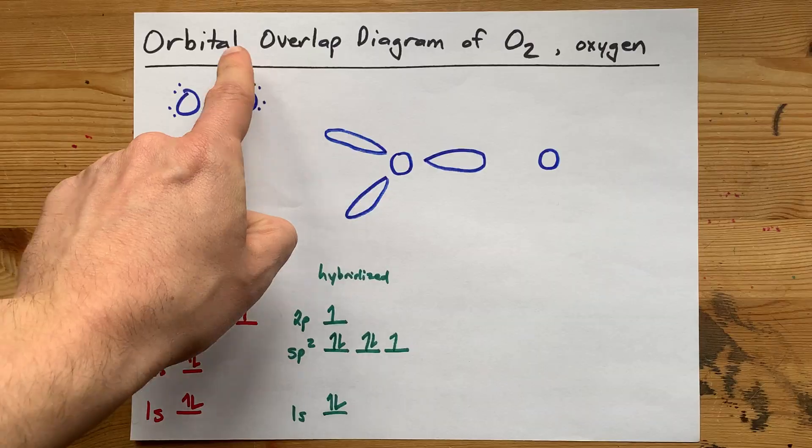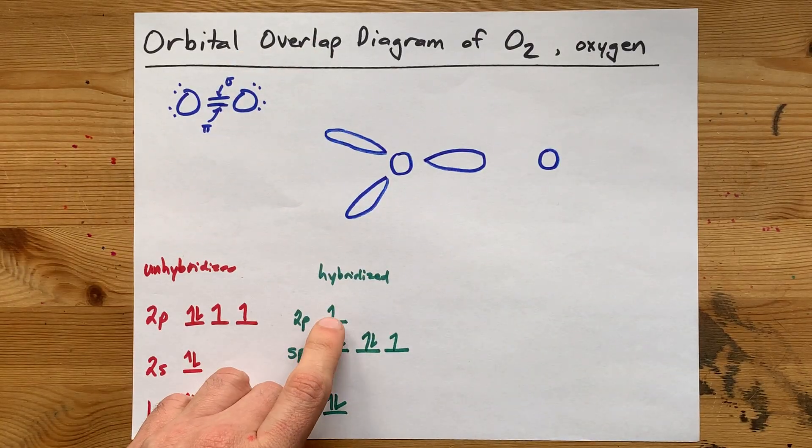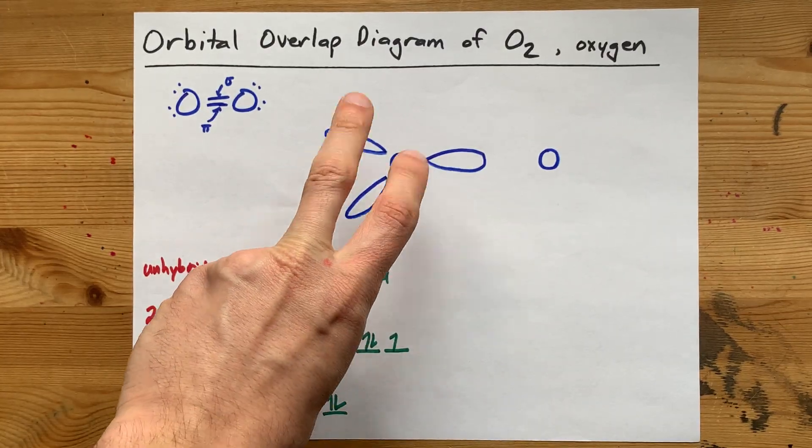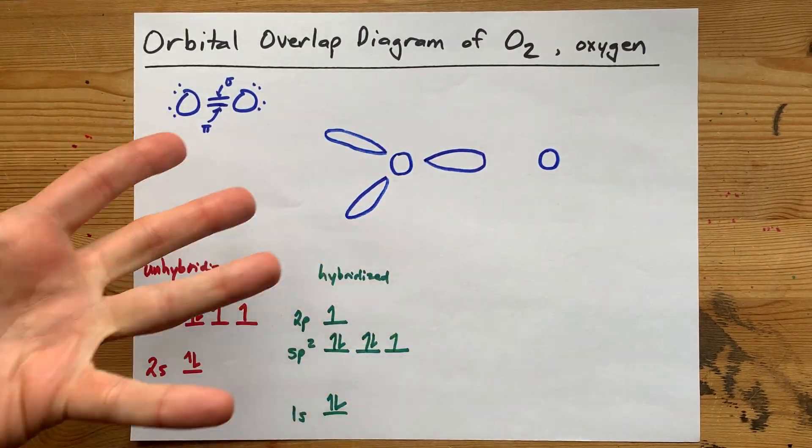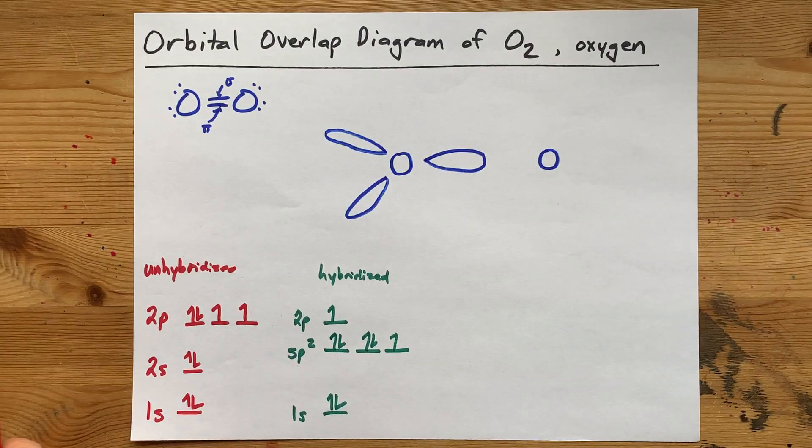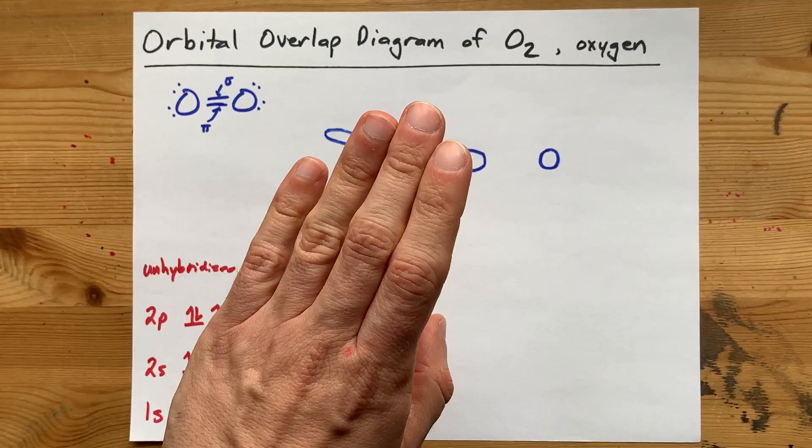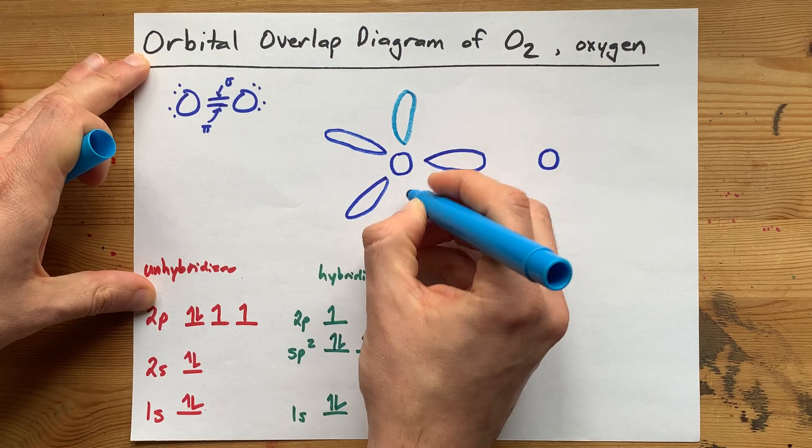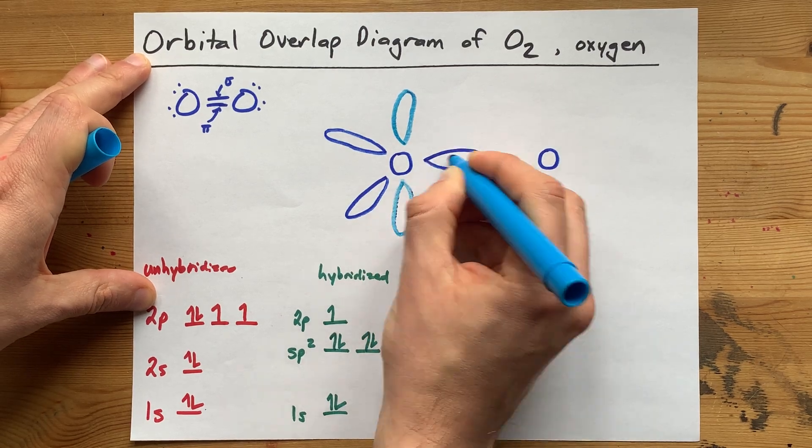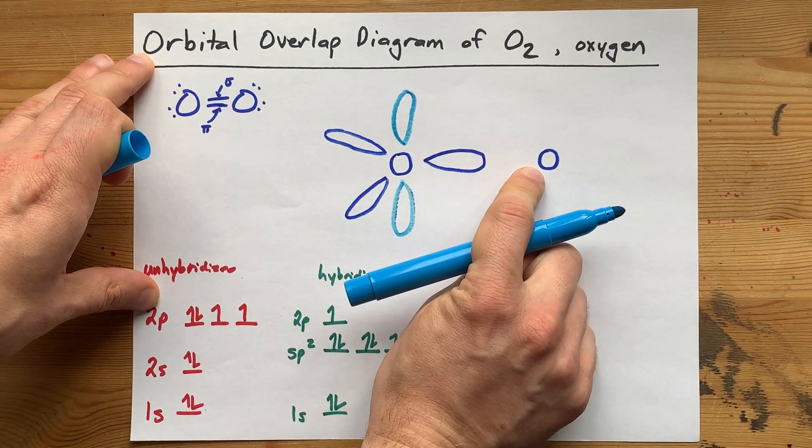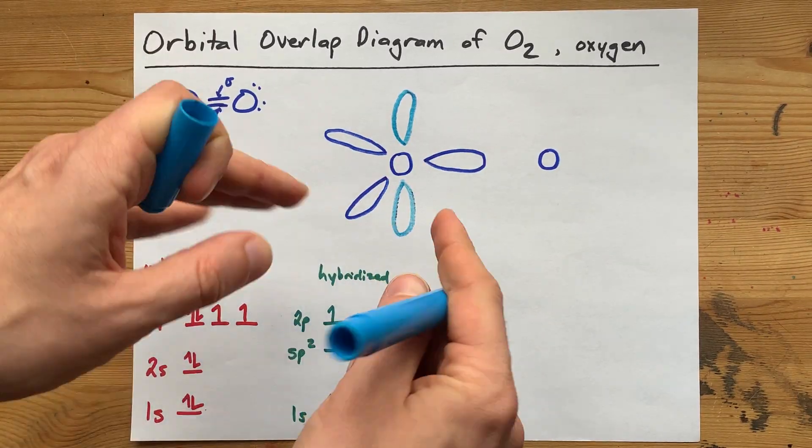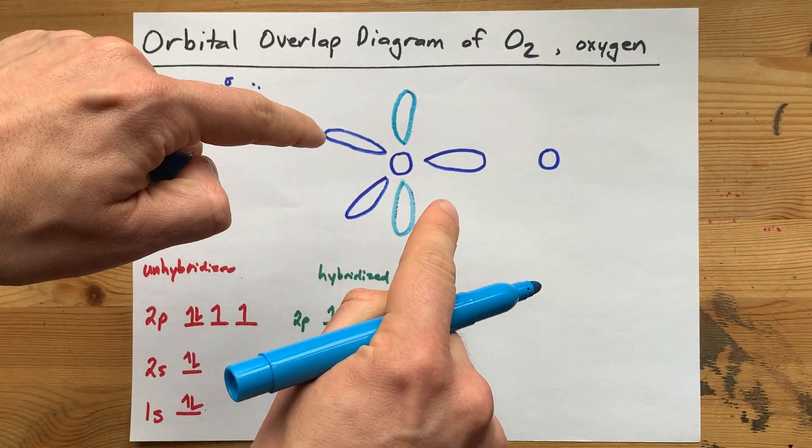The real key behind this orbital overlap diagram is the leftover 2p orbital. Now, a 2p orbital is shaped like a peanut. That 2p orbital goes above and below the bond axis for the sigma bond. I know I've drawn two things here, but a 2p orbital is the peanut that goes above and below.